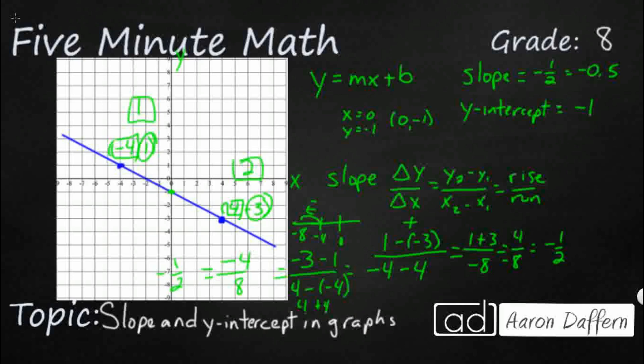So it doesn't really matter which order you take the y's and x's as long as you do the same thing. And there's our answer. Our slope is negative zero point five. Our y-intercept is negative one.